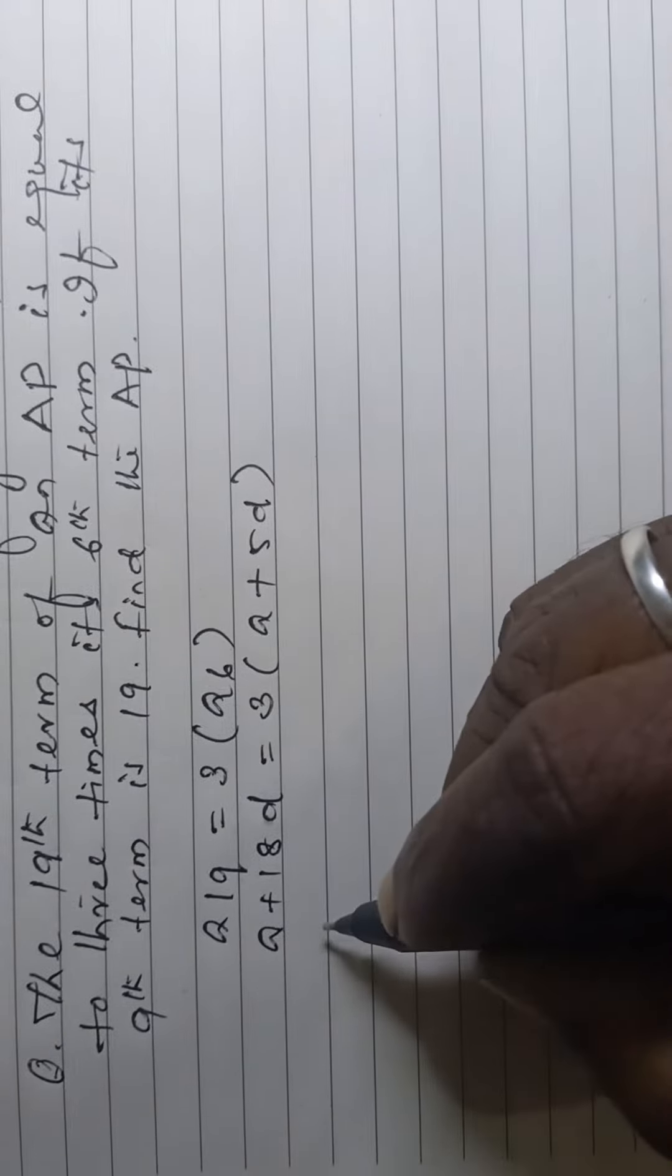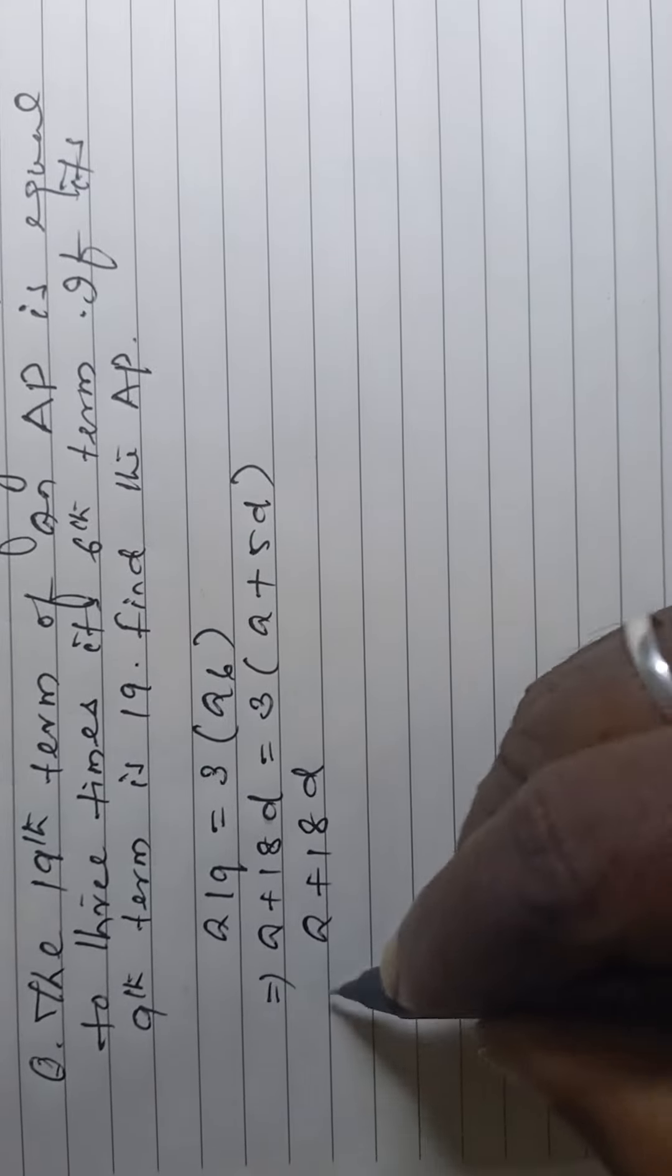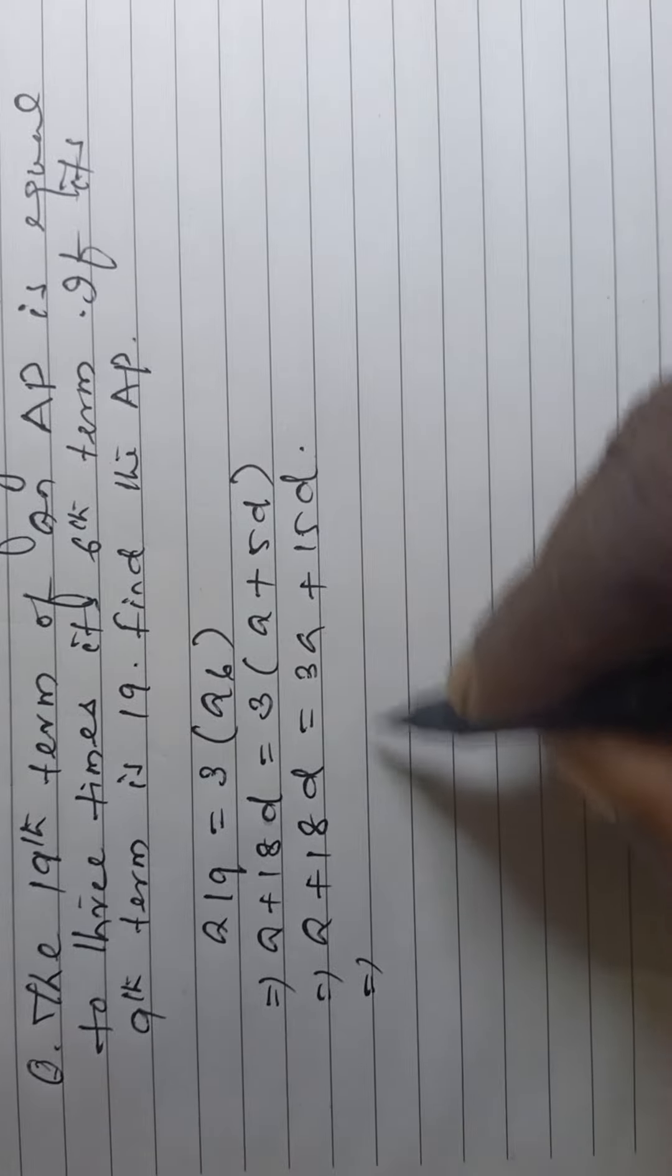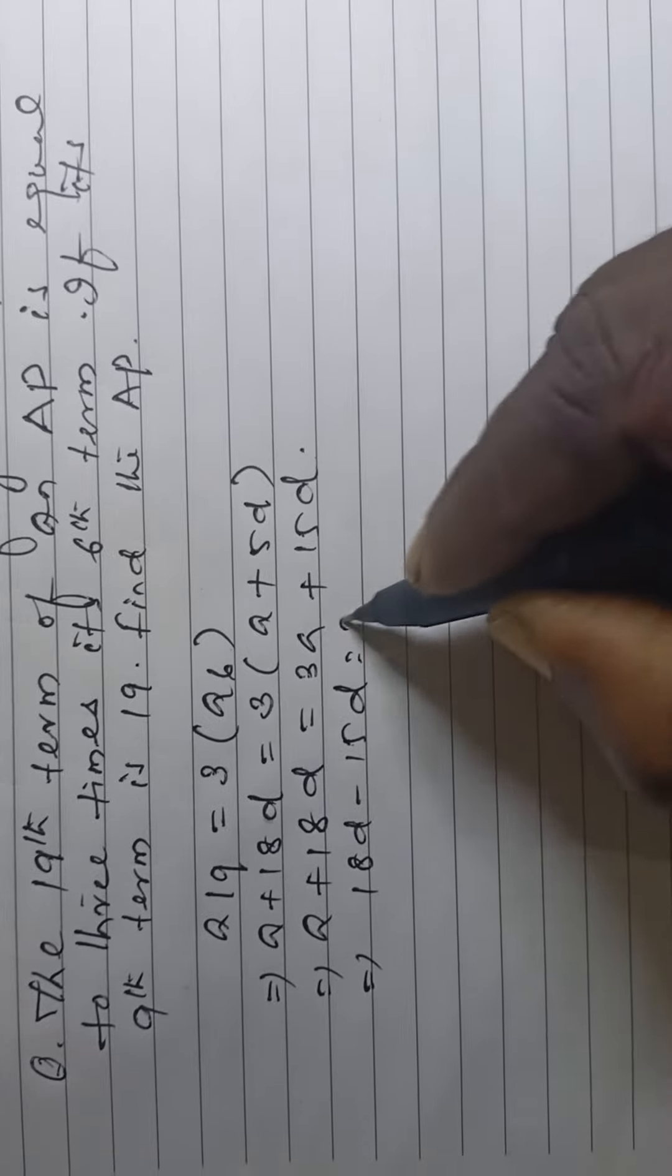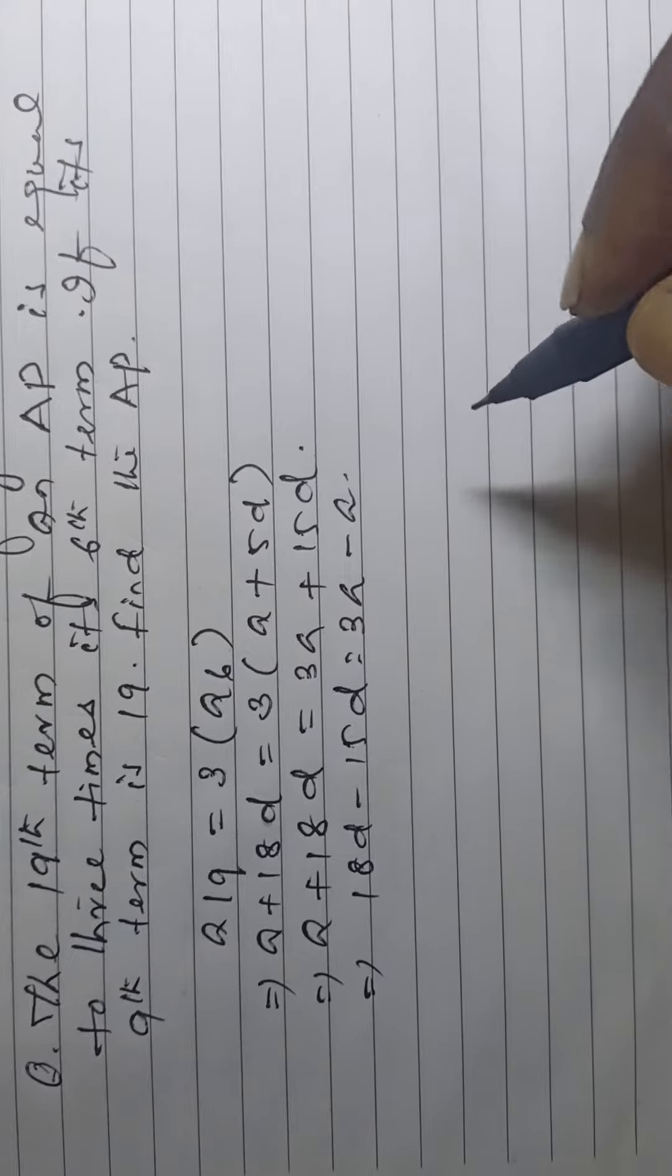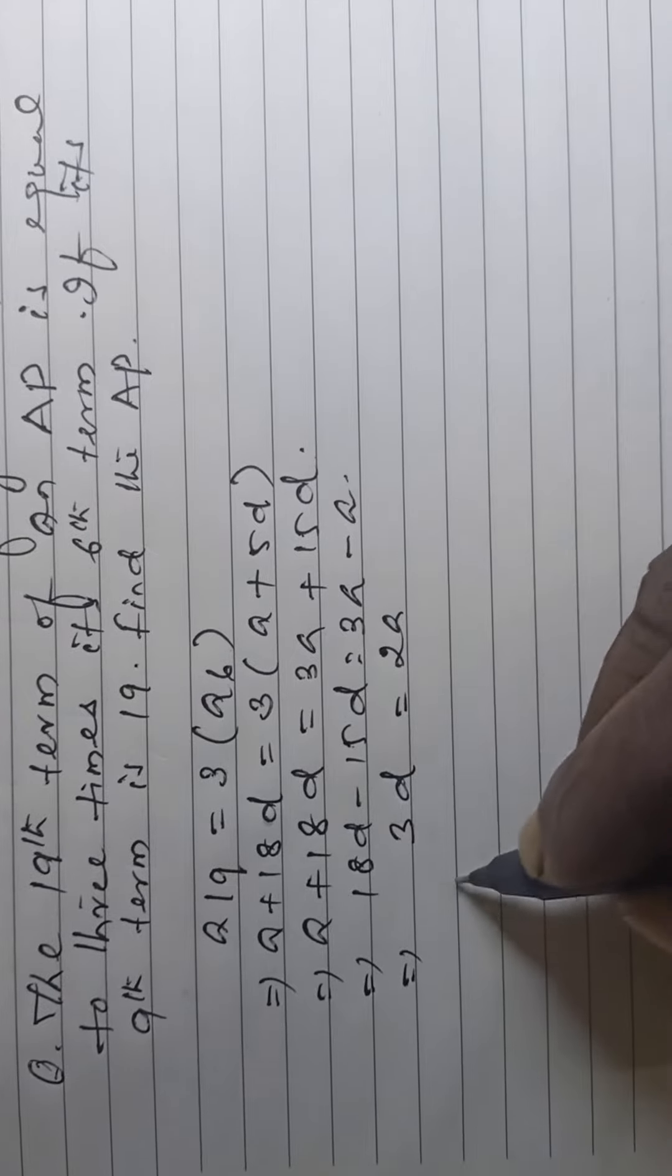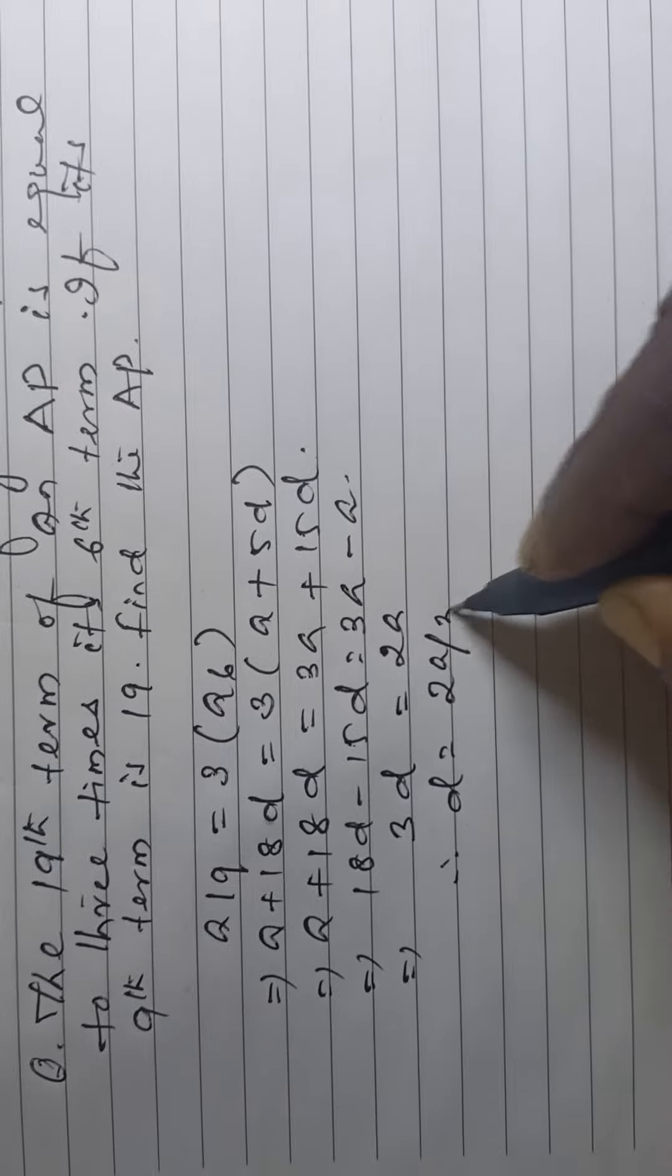Then, a plus 18d is equal to 3a plus 15d. Now, 18d minus 15d is equal to 3a minus a. So, 3d is equal to 2a. Therefore, d is equal to 2a by 3.